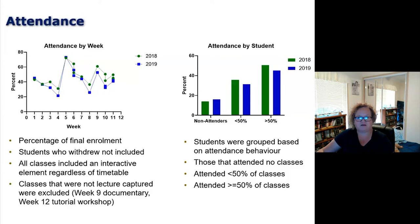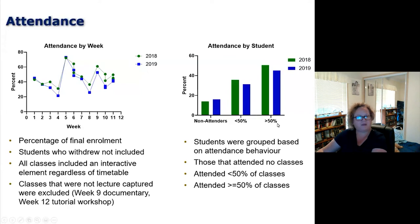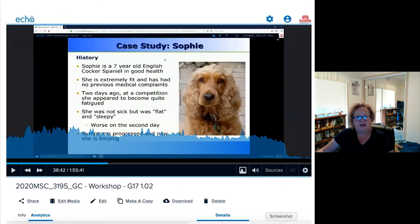I used this data to group students based on their attendance behavior into three groups: non-attenders, students who attended less than 50% of classes in person, and students who attended at least 50% of classes in person — greater than or equal to 50% — as categories for further analysis.